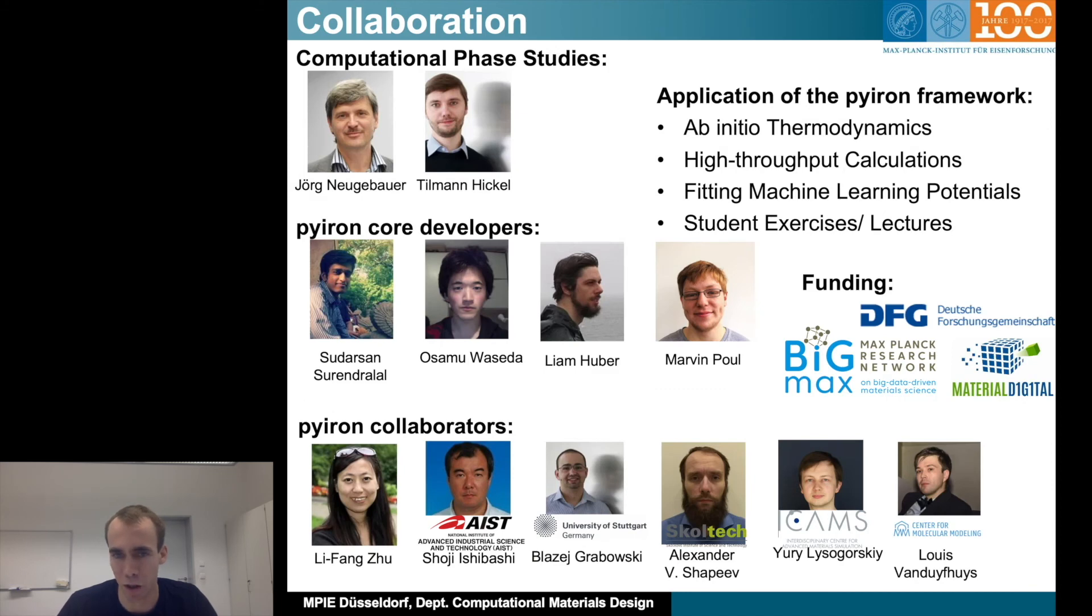And obviously also internally there are many people I would like to thank, just to mention a few of them. So Jörg Neugebauer, who wrote the first prototype of Pyron with the initial version and the perfect sparring partner to discuss all these ideas. Tilmann Hickel, who is my group leader and allowed me to work on this. The Pyron core developers started with Sudarsan, who was mainly focused on the VASP development, the interface for the VASP DFT code. Osamu Waseda, who did the interface for the SPHINX or SPHINX DFT code. Liam Huber, who developed the interactive protocols, which is a way to build more complex simulation protocols. And Marvin Poul, who recently started his PhD with us and is really looking at all the different parts and contributing a lot to the whole project.